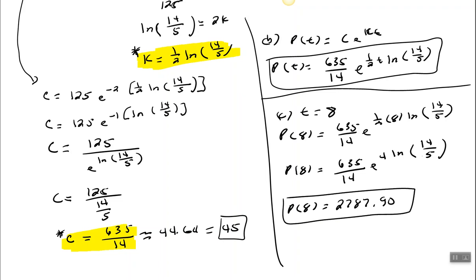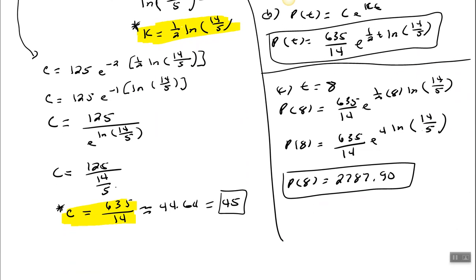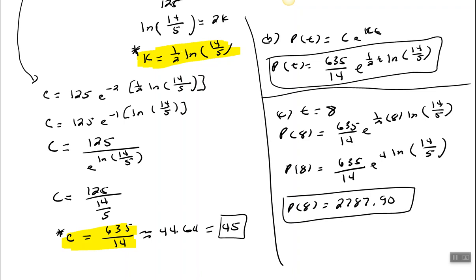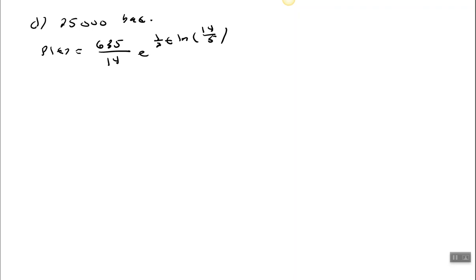Part D asks: after how many hours will the bacteria count be 25,000? We use the same model, replacing P(T) with 25,000 and solving for T. So: 25,000 = (625/14) · e^((1/2) · T · ln(14/5)).